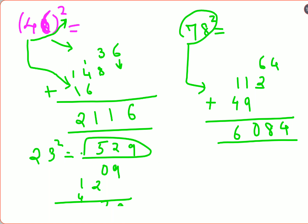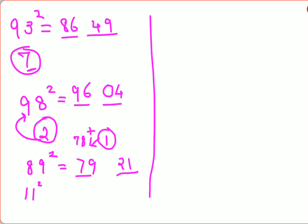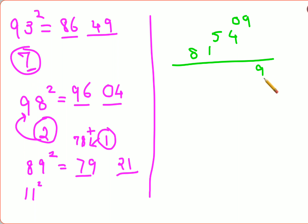Let's verify with 93 squared using the universal method. Write 3 squared as 09. Then 9 times 3 times 2 equals 54. Then 9 squared is 81. Adding them gives 8649 — the same answer as before.